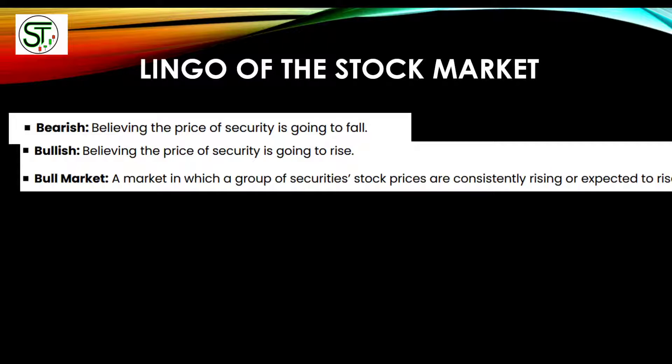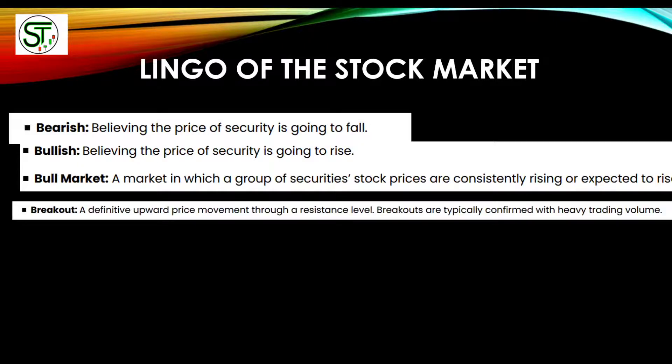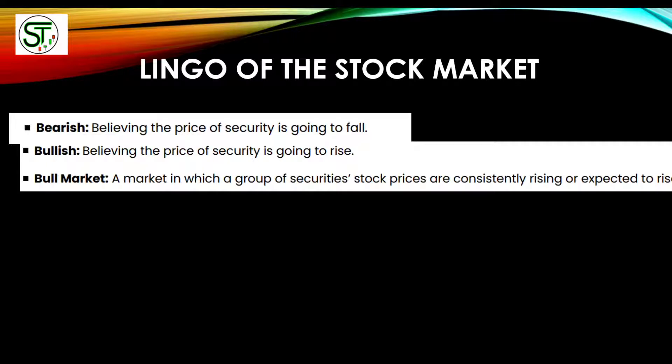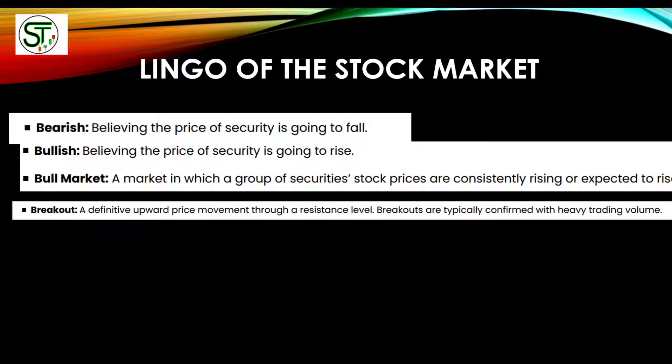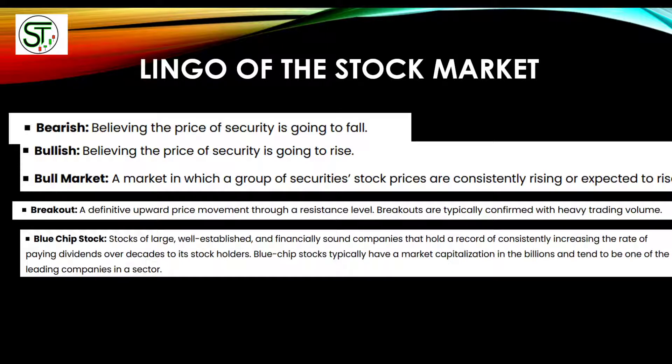Anything with 'bull' means the stock price is going up; anything with 'bear' means it's going down. A bull market is when the market has been going up for a long time. The opposite is a bear market — when the market has been going down for more than three to four weeks or a month. A breakout is a definitive upward price movement through a resistance level. For example, if Apple repeatedly hits $100 and comes back down but one day pushes above it, that's a breakout.